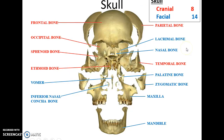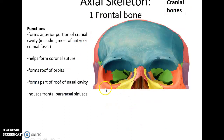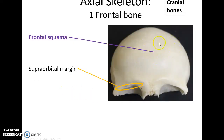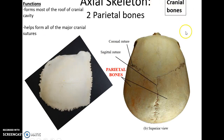There are 22 bones of the skull: eight cranial bones, called that because they help form the cranial cavity, and 14 facial bones. The frontal bone forms the anterior portion of the cranial cavity, helps form the coronal suture, the roof of the orbits, parts of the roof of the nasal cavity, and houses the frontal paranasal sinuses. There is a thickened area at the very front called the frontal squama, and a ridge that helps form the roof of the orbit called the supraorbital margin.